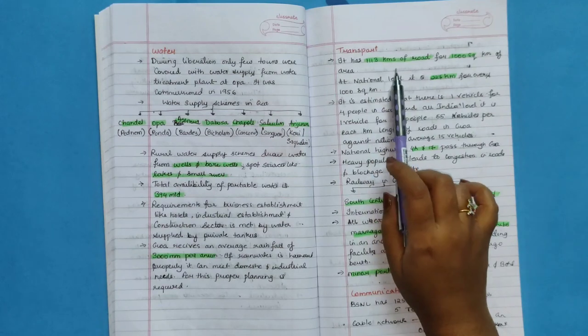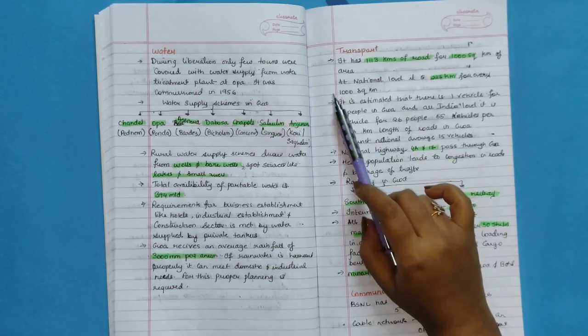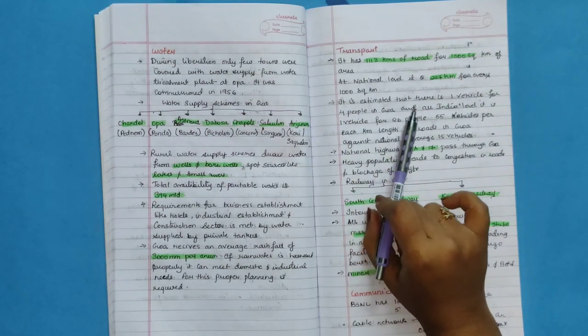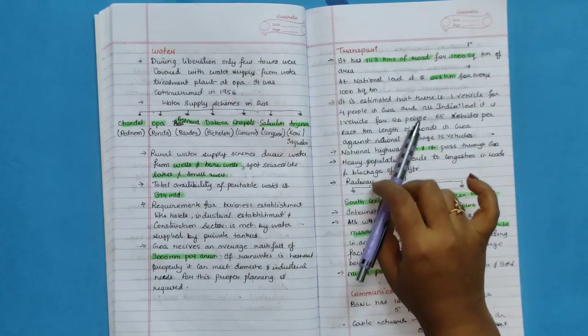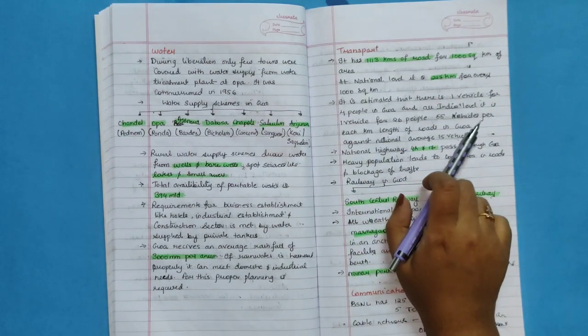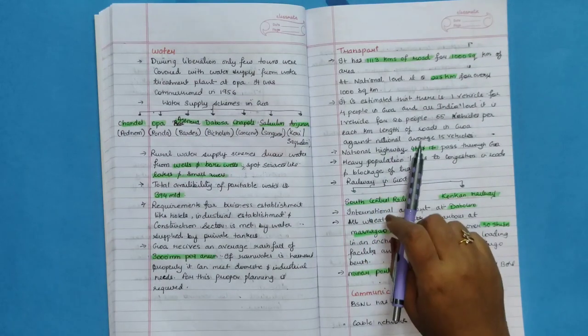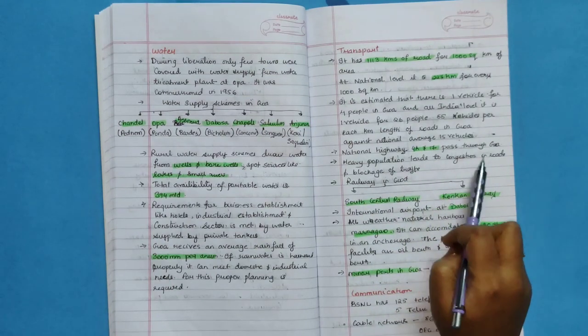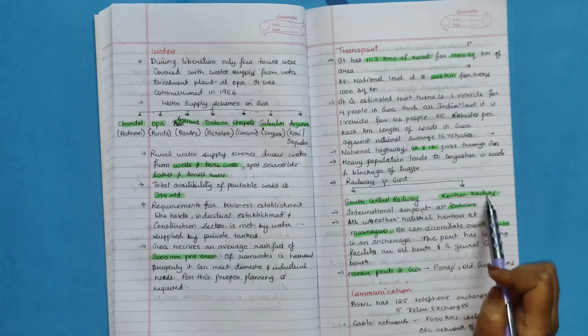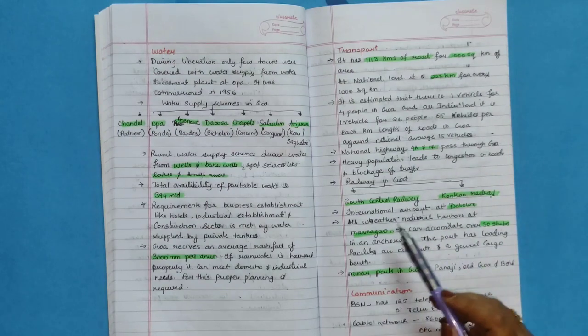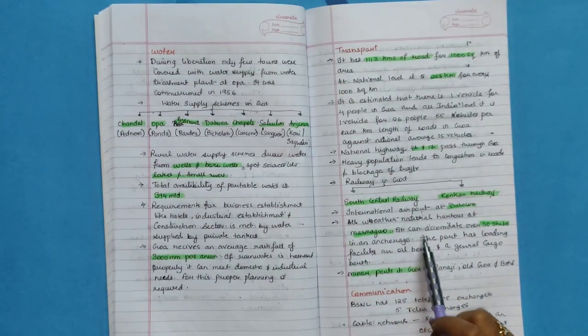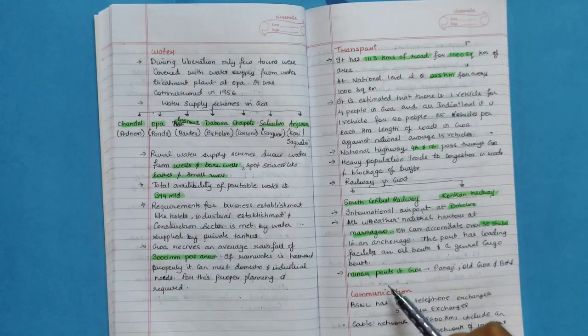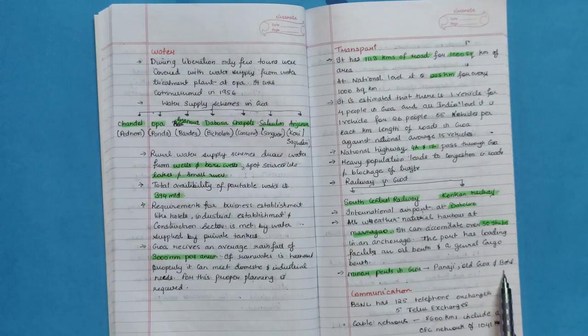Transport. It is estimated that there is one vehicle for four people in Goa and all India level one vehicle for 26 people. 55 vehicles per each kilometer length of road in Goa against national 15 vehicles. National Highway 4A and 17 pass through Goa. Heavy vehicular density leads to congestion in roads and blockage of traffic. Railway in Goa: South Central Railway and Konkan Railway. International Airport at Dabolim. All-weather natural harbor at Mormugao. It can accommodate over 50 ships in an anchorage. The port has loading facility on oil berth and a general cargo berth. Minor ports in Goa: Panjim, Old Goa and Betul.